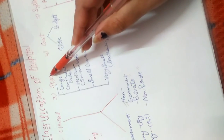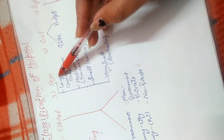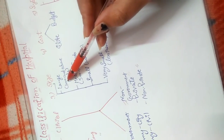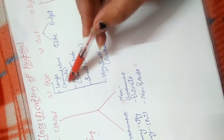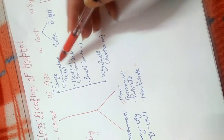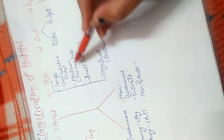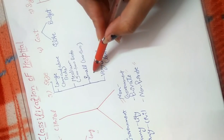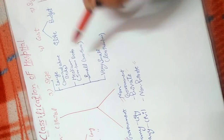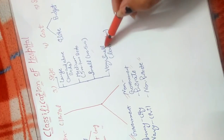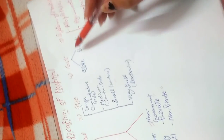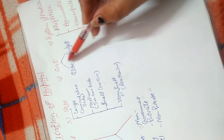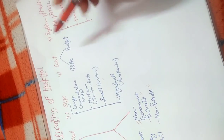Third, on the basis of size: large hospitals have more than 1000 beds; medium-sized hospitals have 500 to 1000 beds; small hospitals have 100 to 500 beds; and very small hospitals have less than 100 beds. Fourth, on the basis of cost, we have allied hospitals — which are large hospitals — and budget hospitals like charitable and civil hospitals, which are smaller.